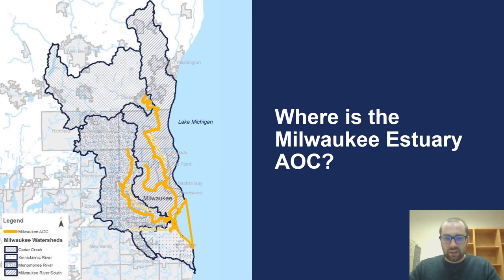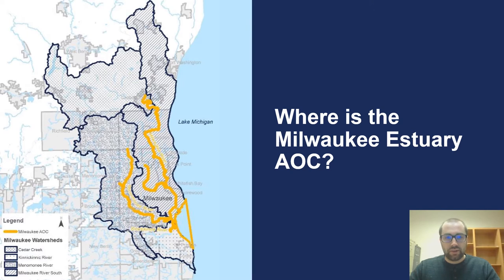So where is the Milwaukee Estuary AOC? The blue shaded areas on the map indicate the four watersheds for each of the rivers that feed into the AOC: Cedar Creek on the north side, Milwaukee River on the eastern side along the coast of Lake Michigan, Menominee, and the Kinnickinnic. The Milwaukee Estuary AOC specifically focuses on the portions of these waterways highlighted yellow on the map — those targeted for cleanup of historical contamination and degradation. The AOC covers two counties, Ozaukee County to the north and Milwaukee County, with three tributaries, three secondary tributaries including Lincoln Creek, Cedar Creek, and the Little Menominee River, as well as 13 municipalities.